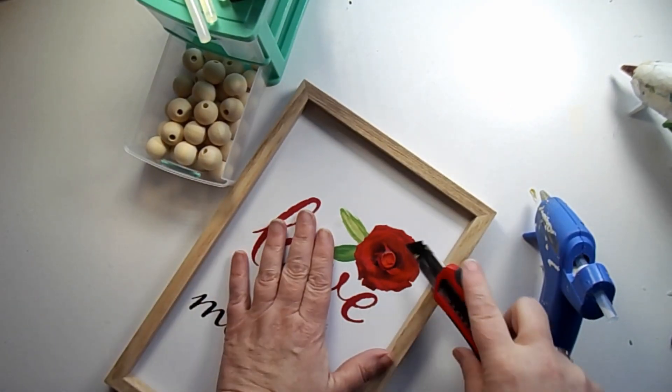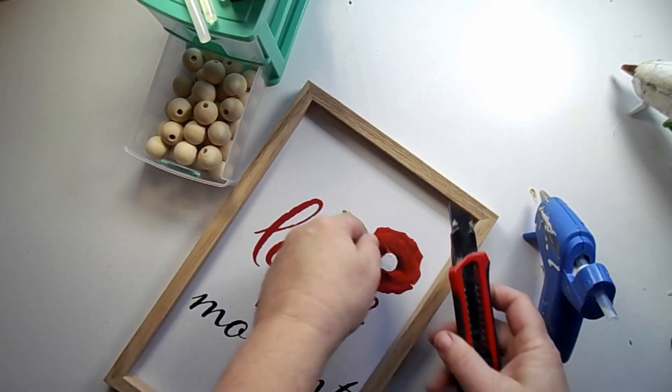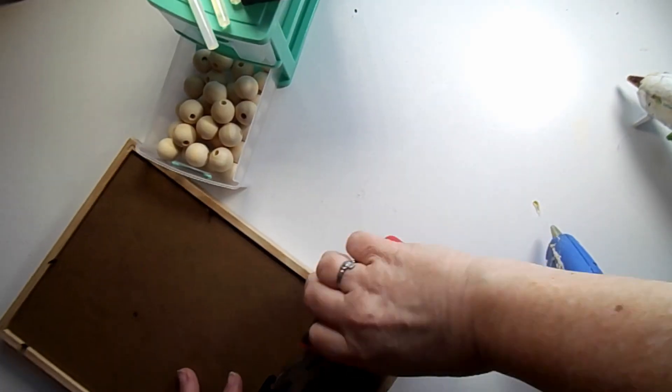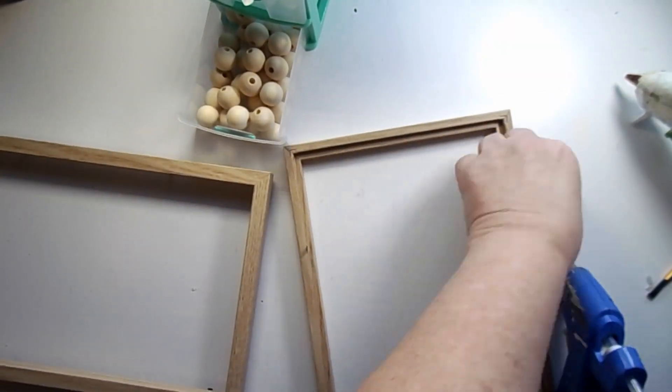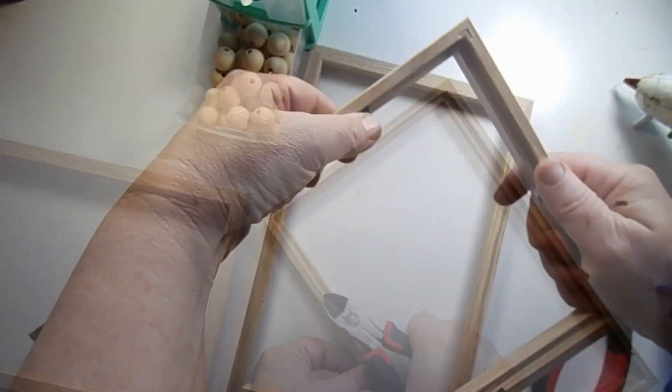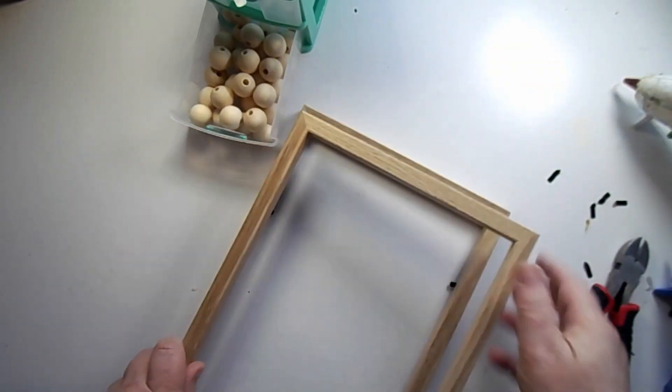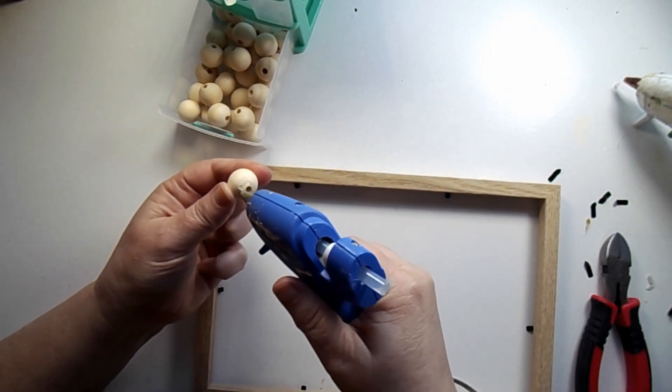To start out you'll want two of these from the dollar tree. I tore off the flower that was there and then just scraped off the remnants. Now I'm taking off the back and the hanger. Next you just want to pull the prongs out of one frame and leave them on the bottom frame. Then you just want to match them up and make sure they line up well.